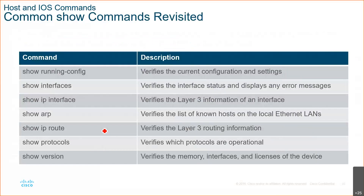These are some of the common show commands: show running-config, show interface, show IP interface, show ARP, show IP route, show protocols, show version, show IP version 4 interface brief, show IP version 6 interface brief. Some of these commands need to be inside you already — you have to practice them so many times that they become part of your language when talking to the router or switch.